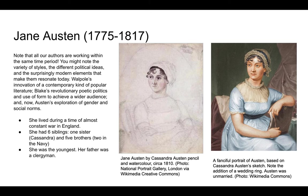Jane Austen lived during a time of almost constant war in England, which a lot of people don't really think too fully about. She had six siblings — only one sister named Cassandra, and five brothers. Two of them were in the Navy. She was the youngest of her family, and her father was a clergyman, which is interesting to think about given the content of Lady Susan.